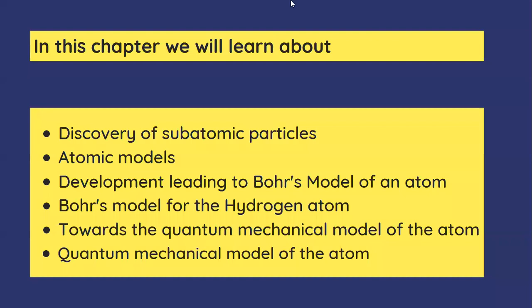In this chapter, we will be studying about the discovery of these subatomic particles and atomic models. We'll look at why Bohr's model of the atom came up, specifically for hydrogen, and then the more recent quantum mechanical model, which is currently accepted. We'll also discuss why we had to shift from Bohr's atomic theory to the quantum mechanical model. The next video will be about the discovery of electrons.